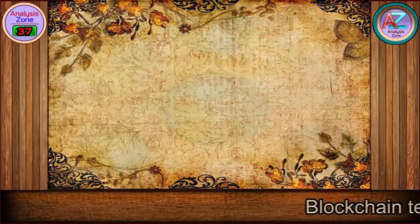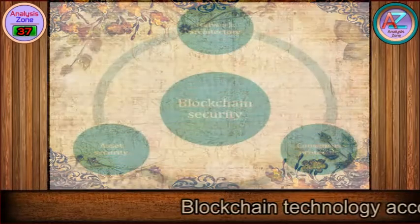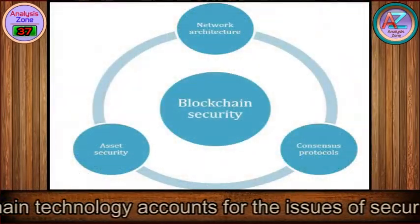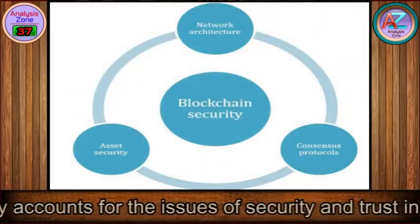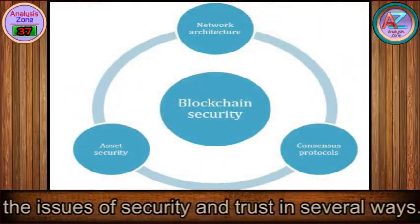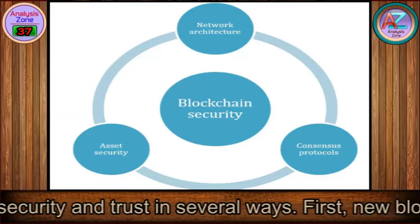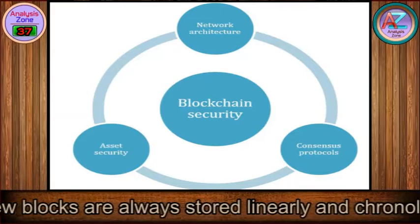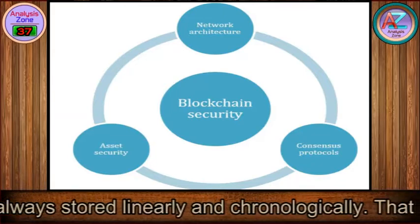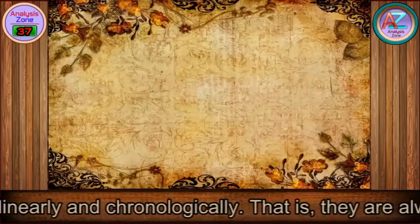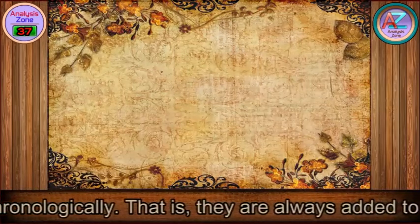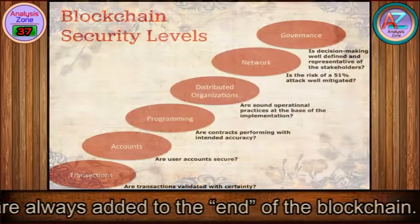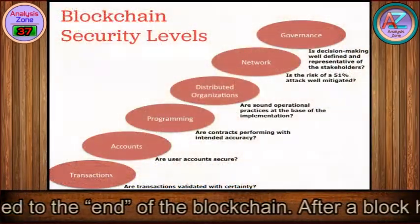Blockchain technology accounts for the issues of security and trust in several ways. First, new blocks are always stored linearly and chronologically — that is, they are always added to the end of the blockchain.